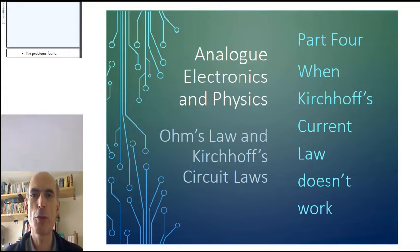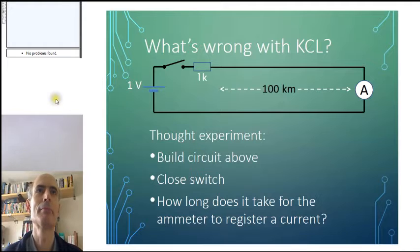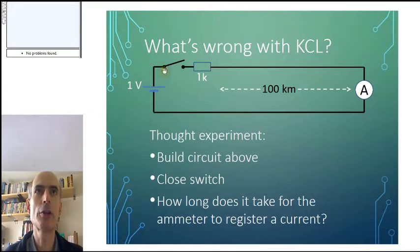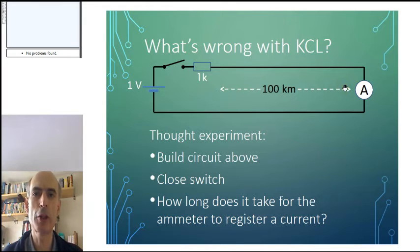This time we need to do a thought experiment. This one. What I've got here is a voltage source, connected via a switch to a 1k resistor, and then a very long wire, 100km long, to an ammeter, and then the circuit is completed with another 100km long wire coming back again.